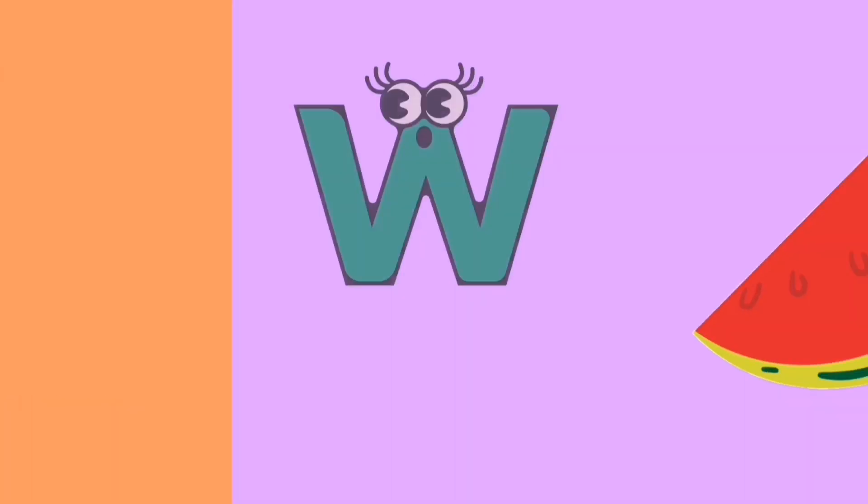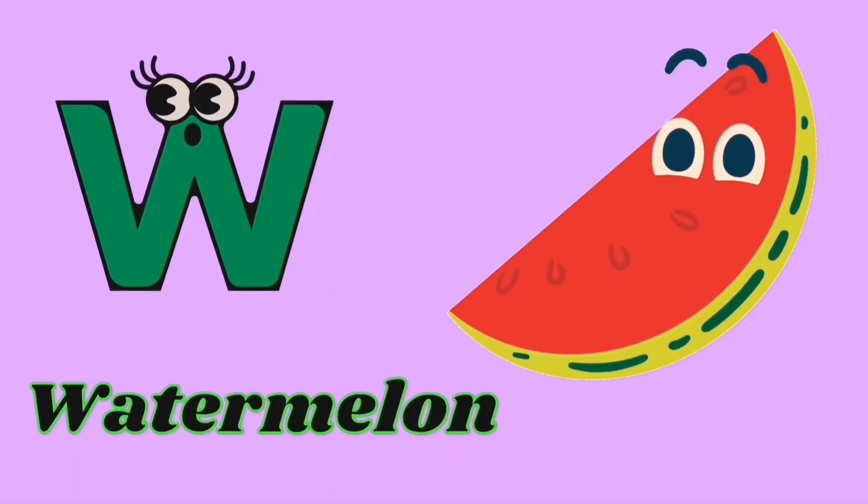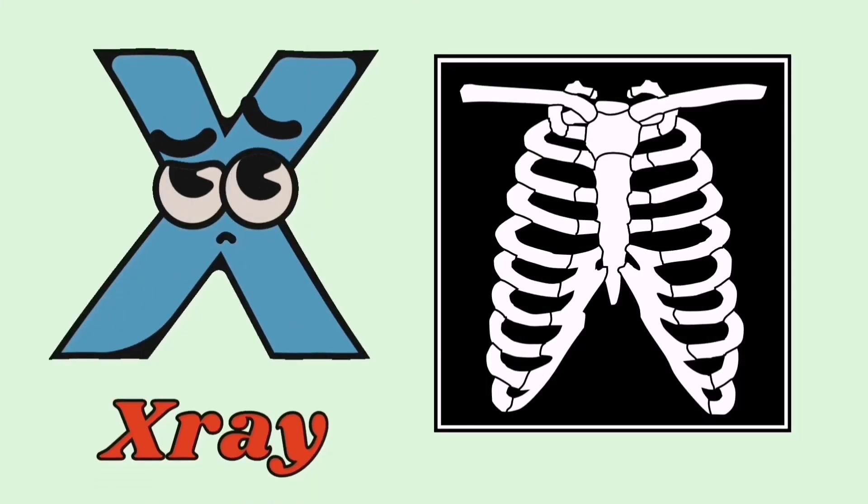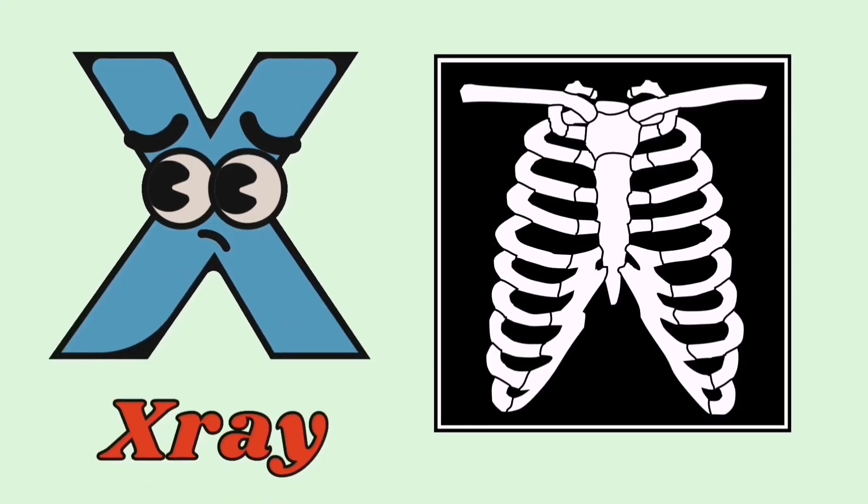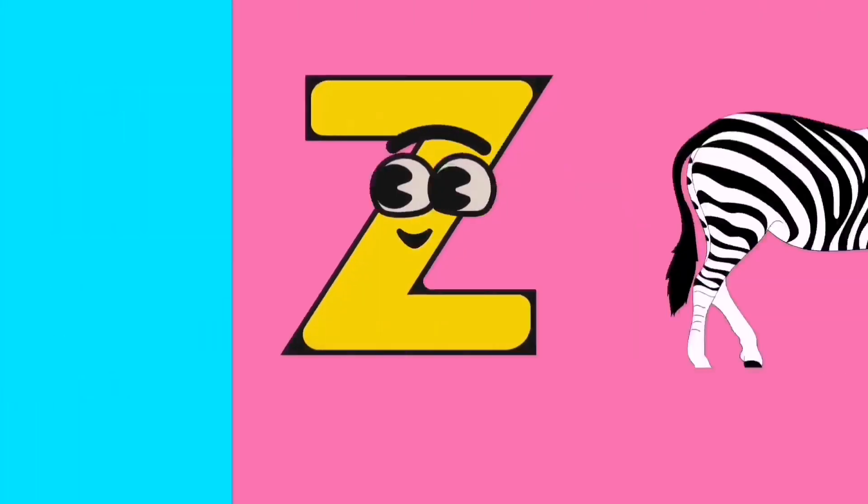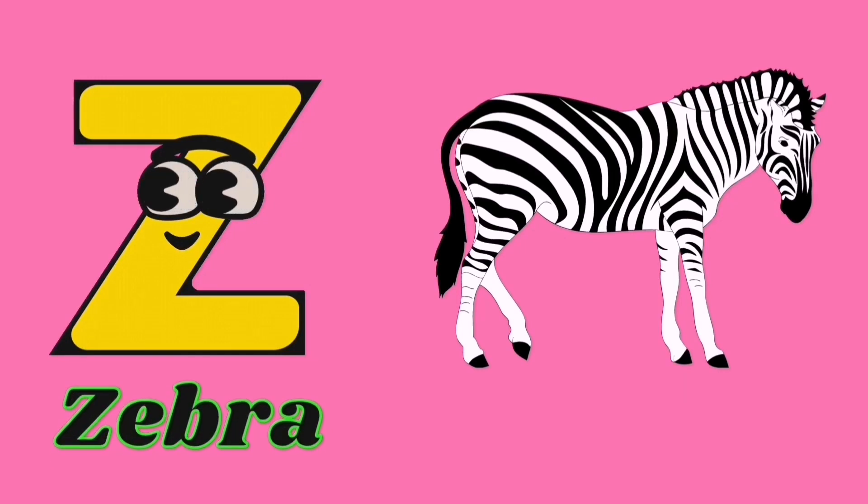W for watermelon, X for x-ray, Y for yarn, and Z for zebra.